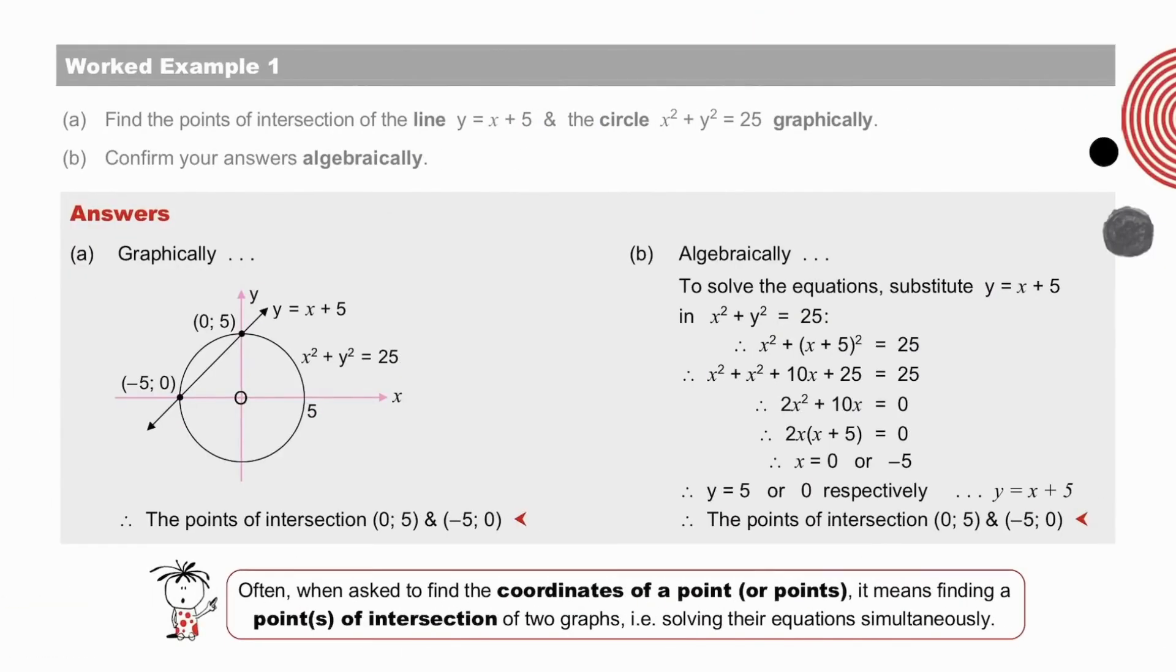We find the points of intersection of the line y equals x plus 5 and the circle x squared plus y squared equals 25 quite easily, graphically. And now, algebraically, we solve these equations. The coordinates of the points of intersection must satisfy both equations. And we arrive at these points here, confirming what we found graphically.